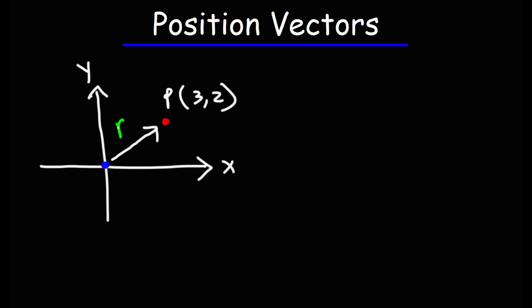It's represented by the symbol R with a vector symbol attached to it. Now the origin is at 0,0. To write a vector between two points it's simply the difference in the x values and the difference in the y values. So I'm subtracting 3 minus 0 to get the x component of the vector and then I'm subtracting the y values 2 minus 0 to get the y component of the position vector.